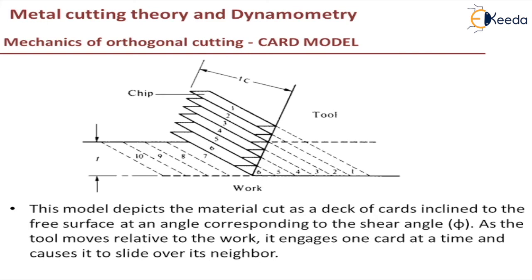We will discuss one more model — the card model — which gives an analogy of how shear will happen in orthogonal cutting. As per this, the shear plane is considered to be layers. There are several layers arranged like cards, one over the other. As the tool slides, the plane number one is in place; as the tool strikes plane number one, it slides over the second plane. Further as the tool moves, the second plane slides over the third. Like this, shearing takes place layer by layer as each card slides over the other. This is the card model.